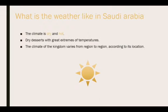What is the weather like in Saudi Arabia? The climate is dry and hot, with dry deserts and extreme temperatures. The climate of the Kingdom varies from region to region according to its location. The regions that are close to the equator are hotter than the regions that are far away from the equator.